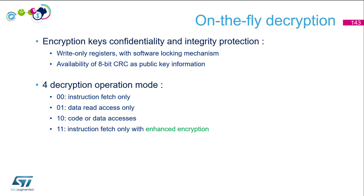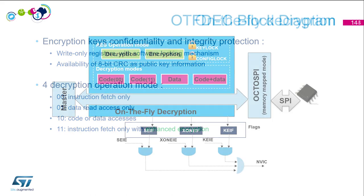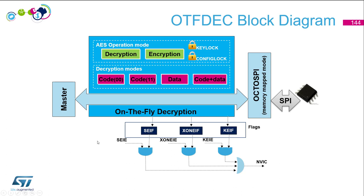For decryption, there are four operation modes: instruction fetch only, data read access only, code or data access, and instruction fetch only with enhanced encryption. The enhanced encryption is a proprietary layer of protection on top of the AES stream cipher.